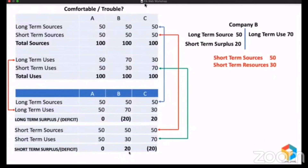But if you look at Company C, they raised 50 million long-term and spent only 30 million, leaving a surplus of 20 million. That surplus of 20 million, along with short-term funds of 50 million, allowed them to create short-term uses of 70 million. And within one year, they are supposed to pay 50 million. What resources do they have for that? 70 million. That's why we say Company C is in a comfortable situation.